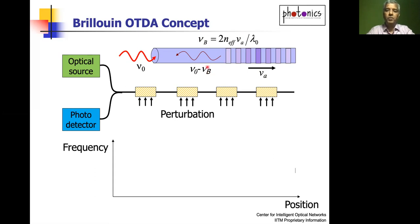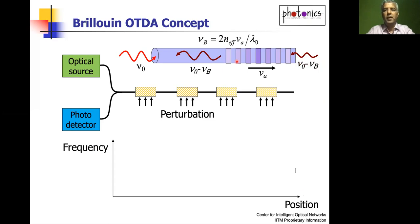Any changes in strain or temperature will change this acoustic velocity, and through that will change the backscattered frequency. We are essentially trying to pick up this backscattered Brillouin frequency — that's what we call the Brillouin frequency shift — and if monitored as a function of position, it gives a map of strain or temperature along the length of the fiber. It also helps to send in probe radiation from the other end, which can stimulate the Brillouin process and resonantly enhance the probe radiation depending on whether the Brillouin gain corresponds to the right probe frequency.